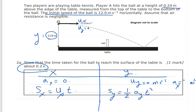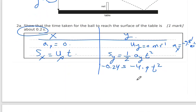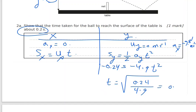So sy = −4.9t². Setting sy = −0.24 m and solving gives t = 0.2 seconds.